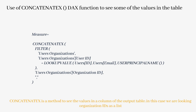Next is the use of CONCATENATEX DAX function to see some of the values in the table. CONCATENATEX is very helpful when you need to get a list of user IDs from a column. We are using it on top of the FILTER function, combining it with the organization IDs from the users organization table, separated by a comma delimiter. The rest of the expression is the same as in step 3. As we move further, all the DAX expressions keep getting combined, building from very small steps and proceeding further.